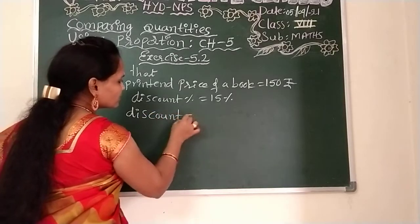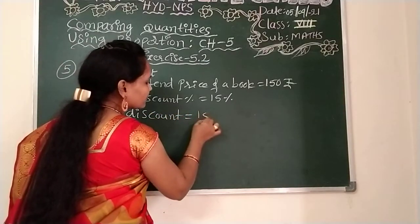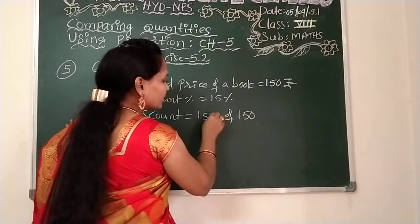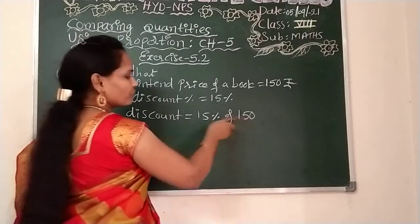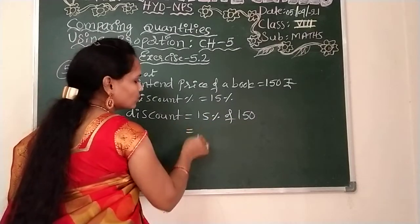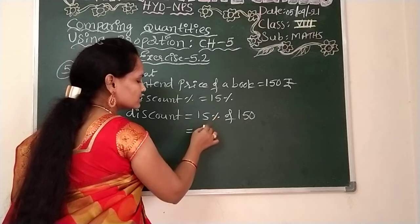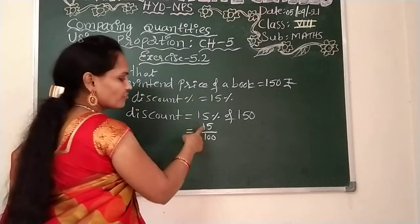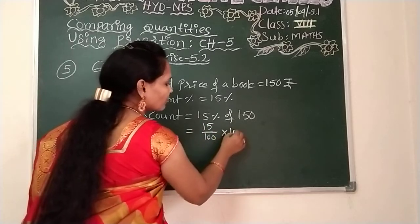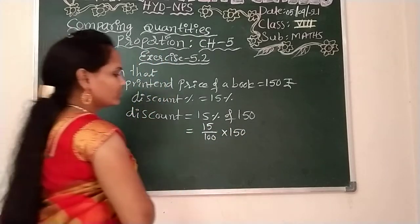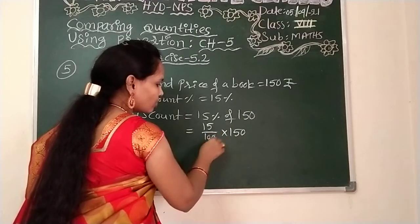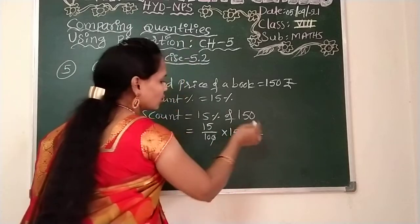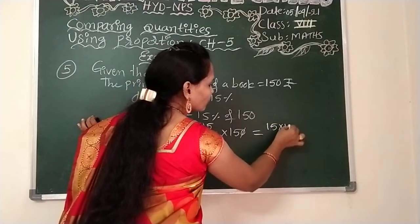Now, discount is equal to 15 percent of 150 rupees. This is the printed price of the book, so on 150, 15 percent we need to calculate. If you remove the percentage it will be over 100, and you can calculate. So here, 15 into 15 divided by the denominator 10.